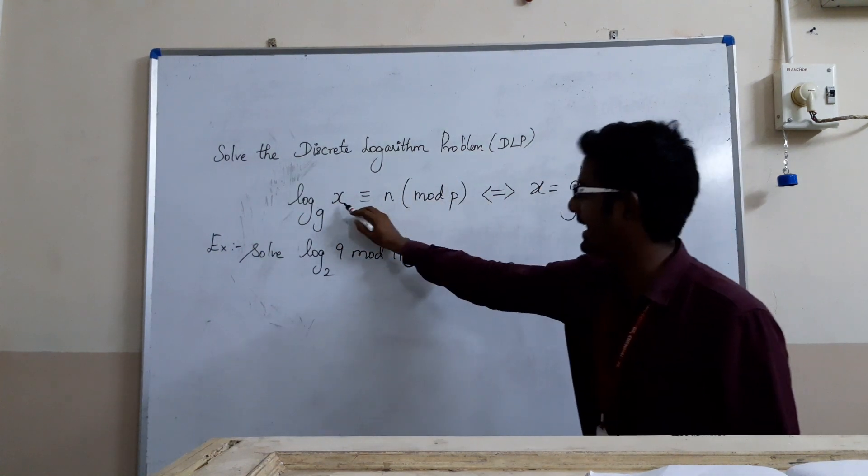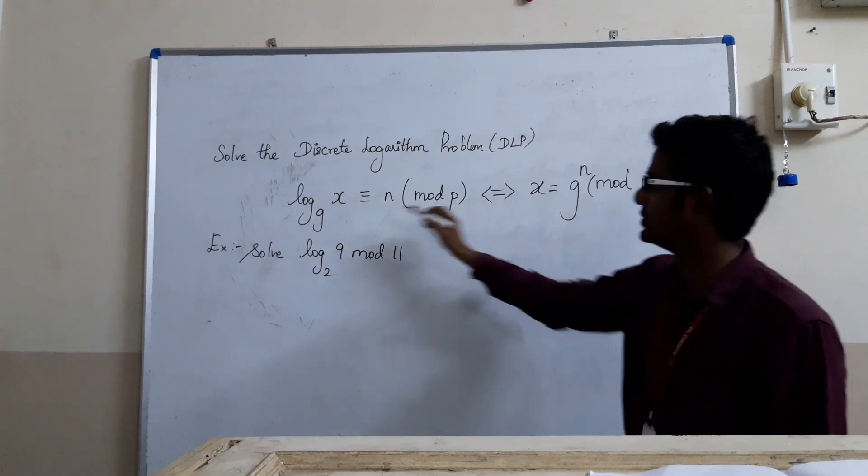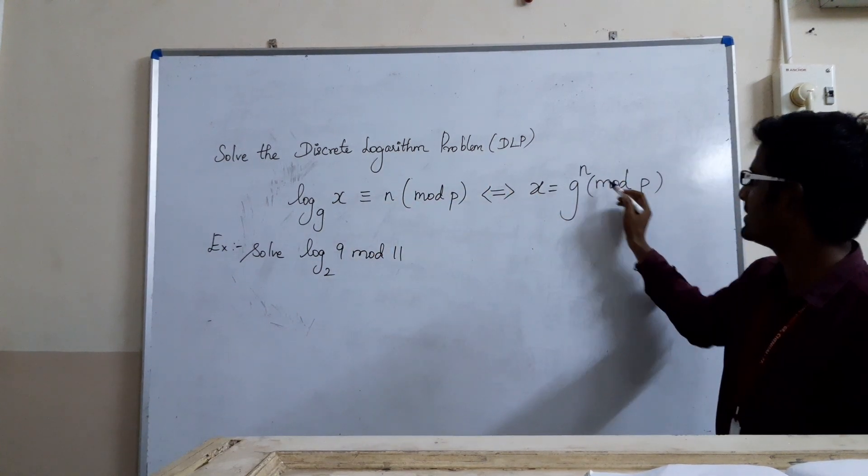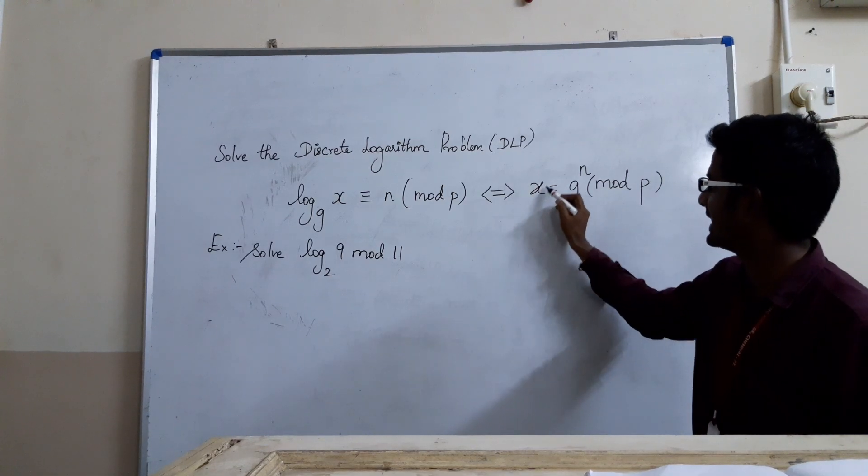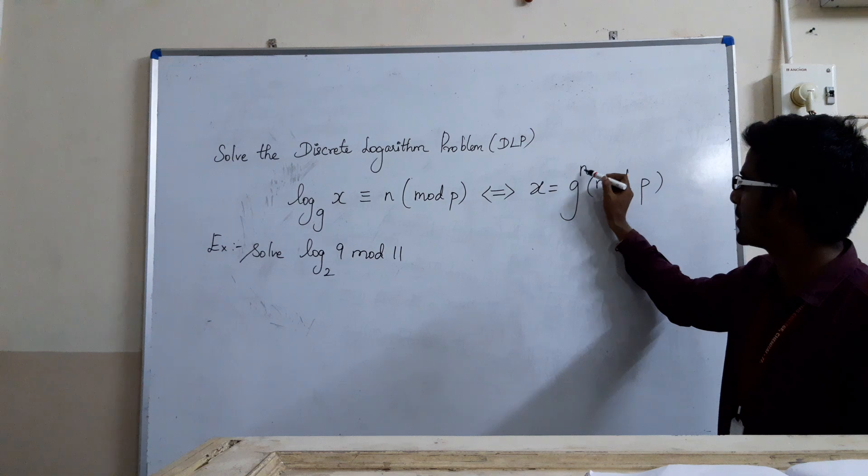This can be rewritten as x = g^n mod p. We want to find this x, which equals g power n mod p. The real security is finding this x. Now, if we want this x, we have to put the appropriate n.